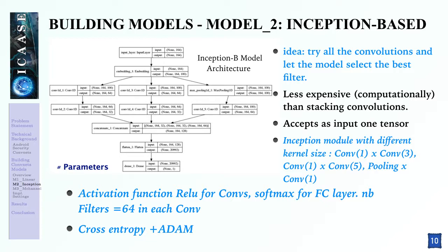The idea behind the second model, which is an inception-based one, is to try all convolutions with different filter sizes and let the model select the best result. This model is computationally less expensive. The activation function is ReLU for convolutional layers and softmax for fully connected layers. The number of filters is 64 in each convolution, and we have used binary cross-entropy as the loss function and Adam as the optimization algorithm.